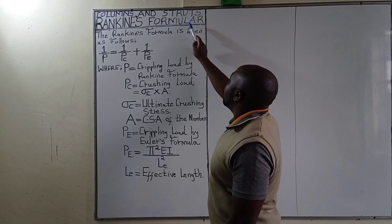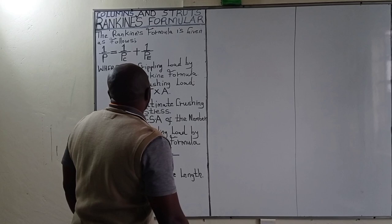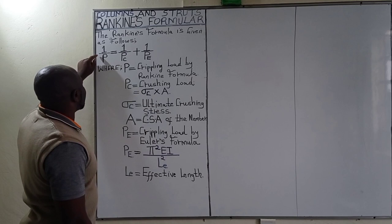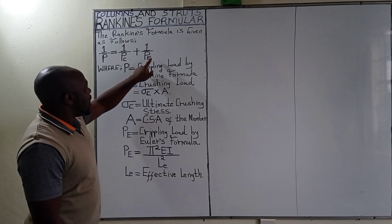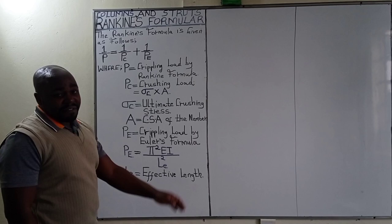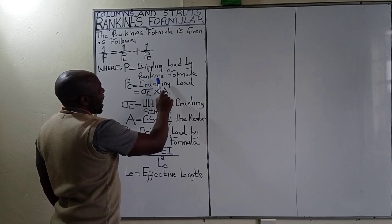We are still dealing with columns and struts, and in the derivation of the Rankine's formula, the formula is given as: 1 over P equals 1 over Pc plus 1 over Pe, where P on the left-hand side is the crippling load by the Rankine's formula.